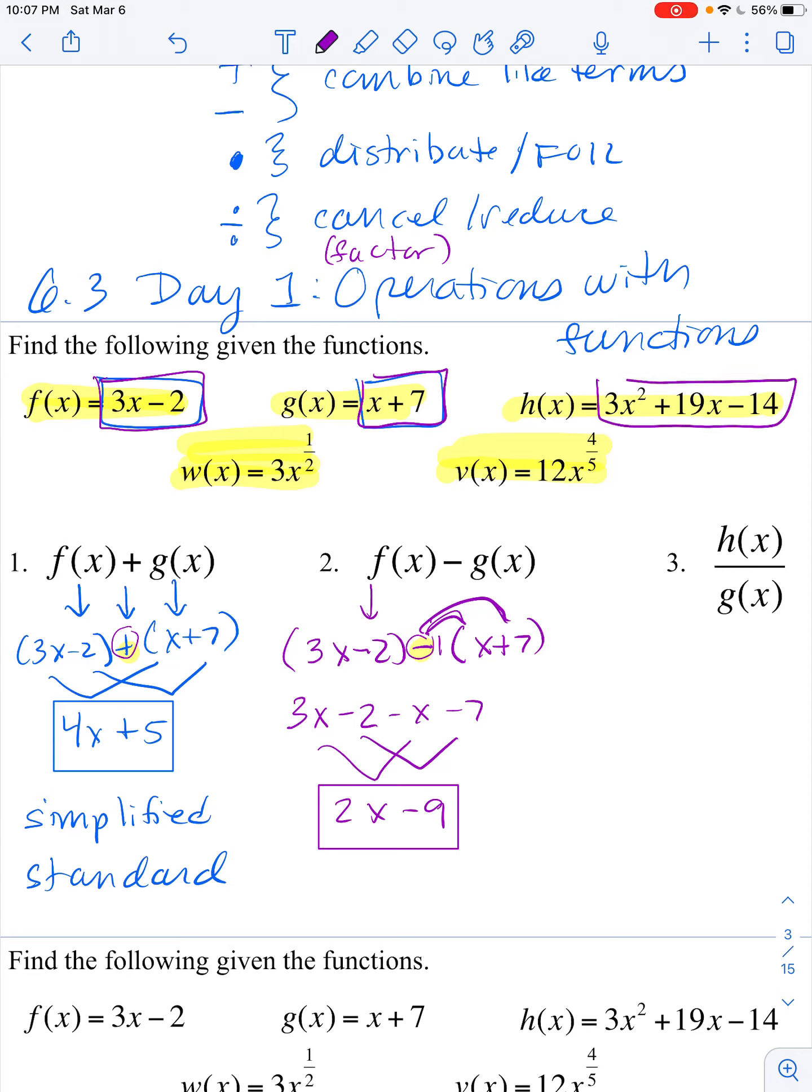We are going to take 3x squared plus 19x minus 14, which is h, and we're going to put it over or divide by g of x, which is x plus 7. So I'm going to factor this top and see if I can get a factor out that would allow me to cancel with the bottom and reduce. This has a 3 in this first spot.